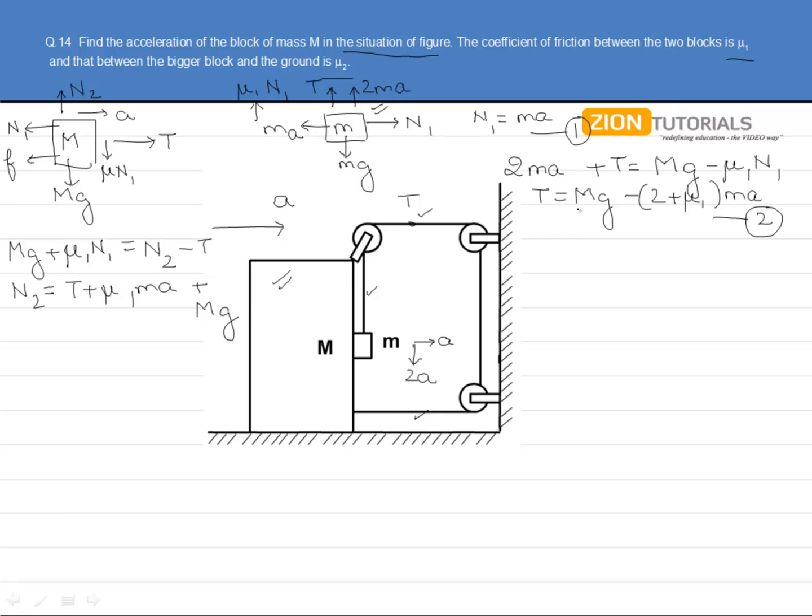Putting the value of tension from equation number 2 into this equation, we can say that N2 equals Mg plus mg minus 2mA, marking it as equation number 3. Let us move ahead.